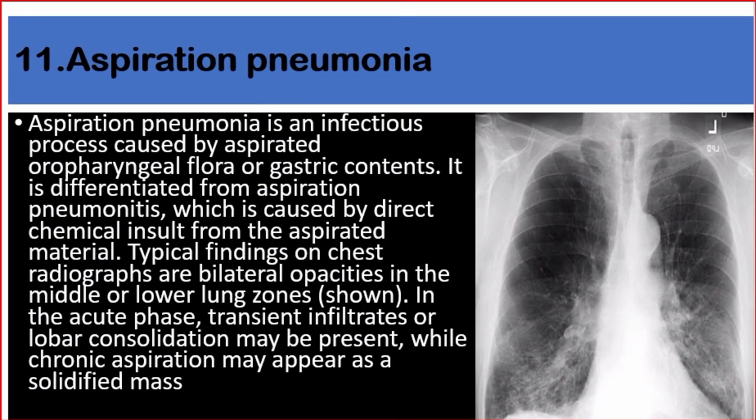Number eleven: aspiration pneumonia. Aspiration pneumonia is an infectious process caused by aspirated oropharyngeal flora or gastric contents. It is differentiated from aspiration pneumonitis, which is caused by direct chemical insult from the aspirated material. Typical findings on chest radiographs are bilateral opacities in the middle or lower lung zones. In the acute phase, transient infiltrates or lobar consolidation may be present, while chronic aspiration may appear as a solid mass.